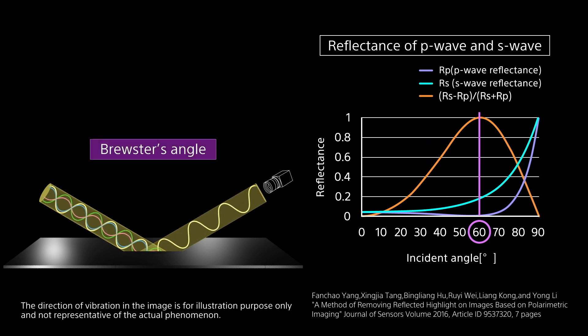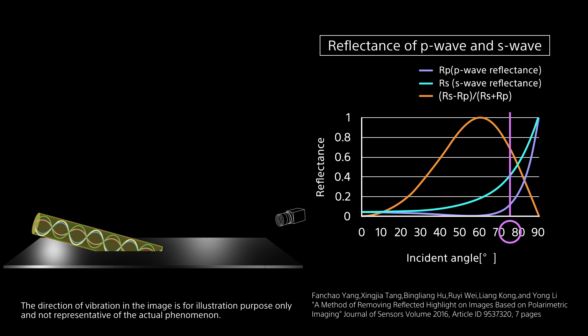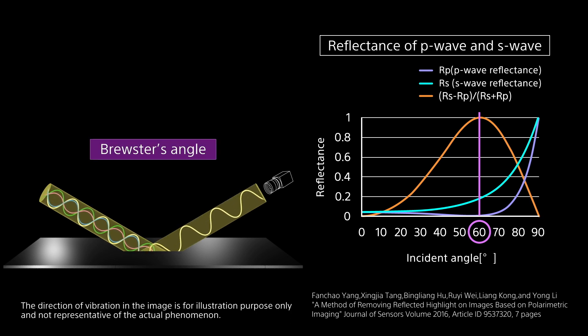The angle at which we can achieve the highest degree of polarisation is called Brewster's Angle. This varies depending on materials, but for most it is 60 degrees.